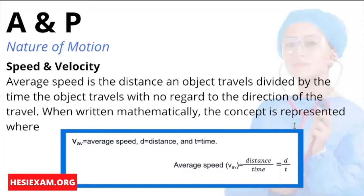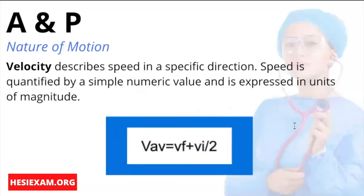Velocity describes speed in a specific direction. Speed is quantified by a simple numeric value and is expressed in units of magnitude. Velocity is also a vector quantity, meaning it describes the time rate of change of an object's position.